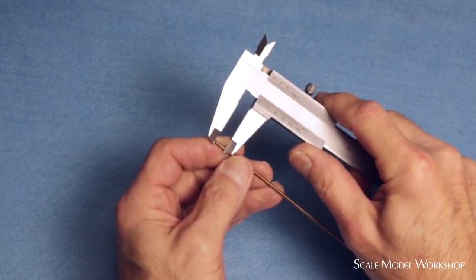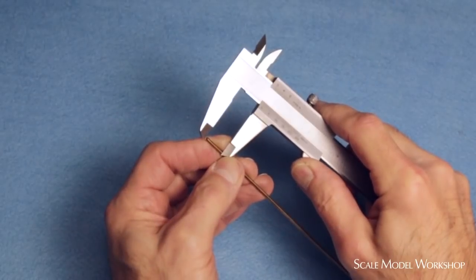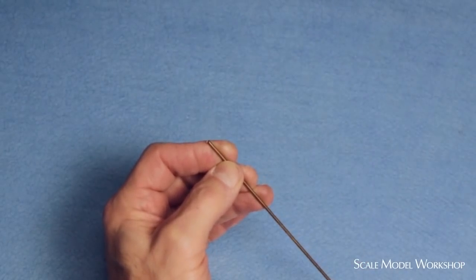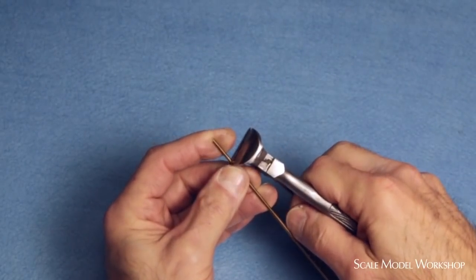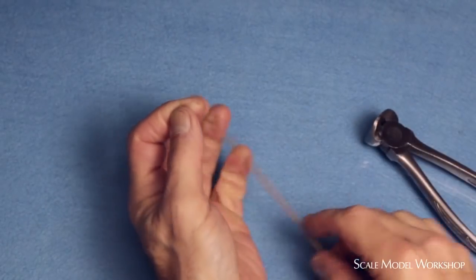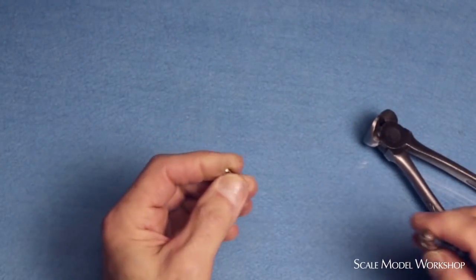It starts with a piece of brass wire. The diameter of the wire should be at least the width of the blade. Cut off the necessary length of wire and chuck it in a pin vise.